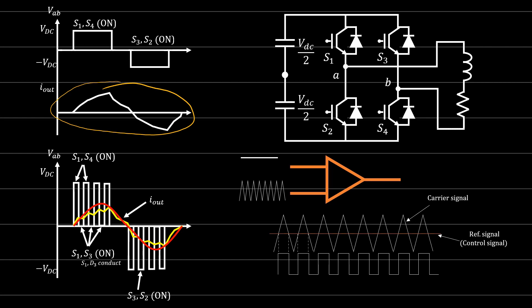The way to modify the output and make it closer to a sine wave is to not generate a full square wave — instead we chop it into smaller square waves. Instead of having S1 and S4 conducting all the time on the positive side, we turn them on for a period, then turn them off. At the zero-voltage point, we turn on switch one and switch three instead of switch one and four. We disconnect switch four and connect switch three, and current circulates through switch one and diode three, giving zero output voltage.